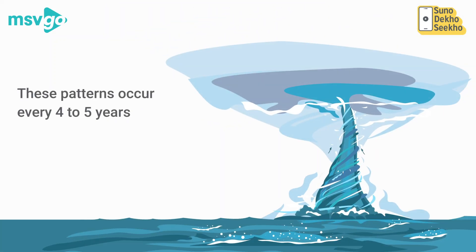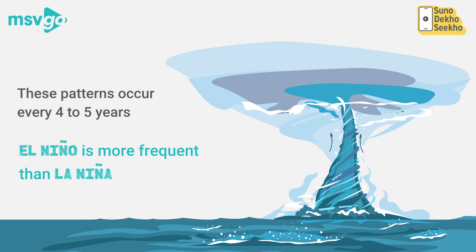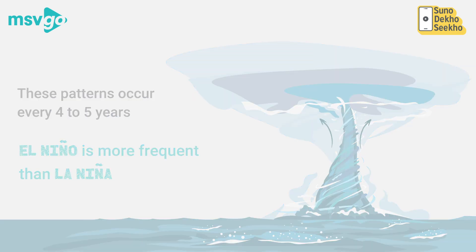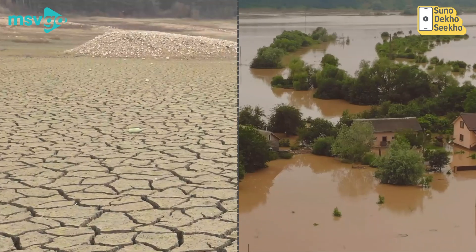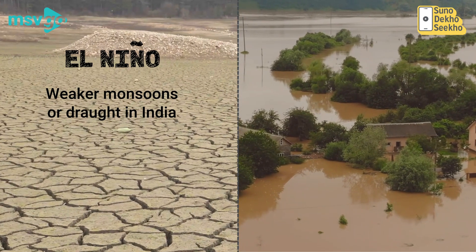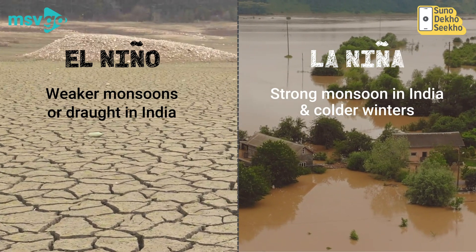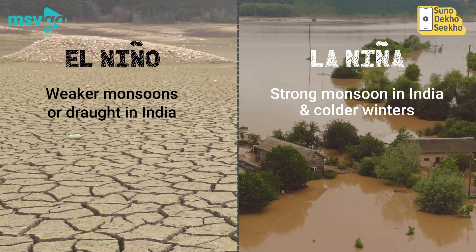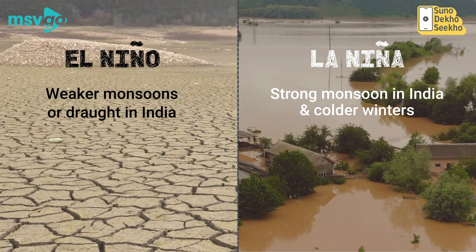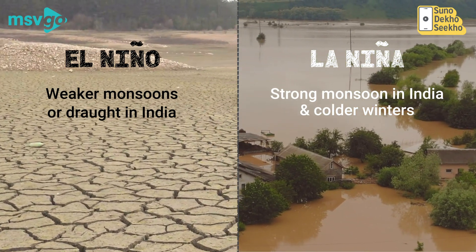Since 1950, India has faced 10 droughts due to El Niño. Since India is largely dependent on agriculture, these patterns are very important to understand.